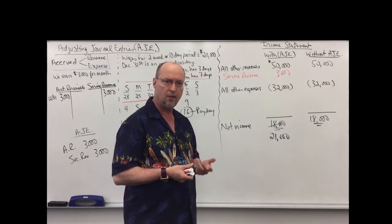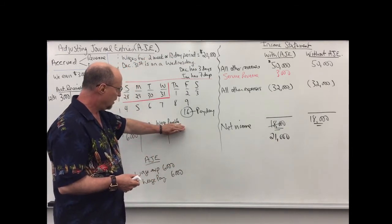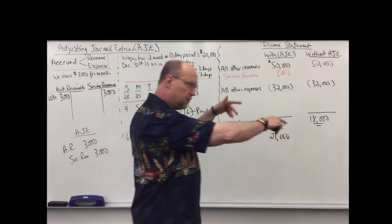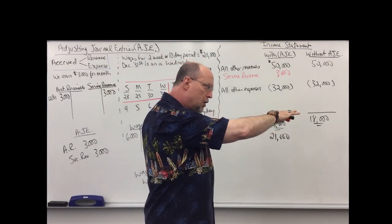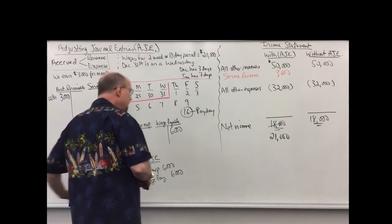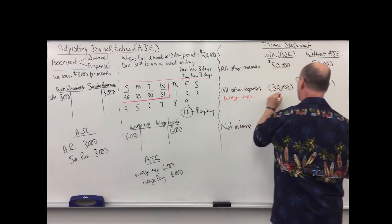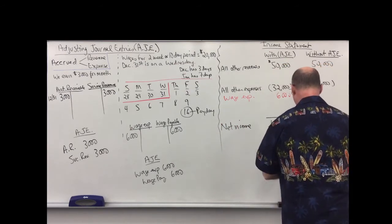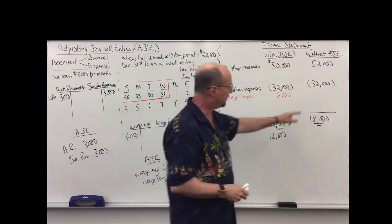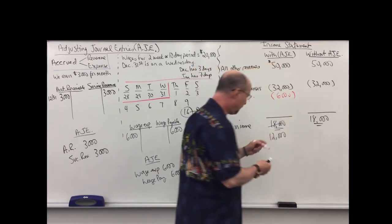Now we have to go through the same thought process. If I did not accrue wage expense, I would think that my liabilities were zero or $6,000 less — liabilities would be understated by $6,000. Wage expense would be $6,000 less than it actually is. If wage expense is $6,000 less, my expenses would appear to be $32,000 and net income $18,000, but really my expenses are $38,000 and net income is $12,000. If I undervalue expenses, I overvalue income. So without the adjustment, my net income is overstated by $6,000.